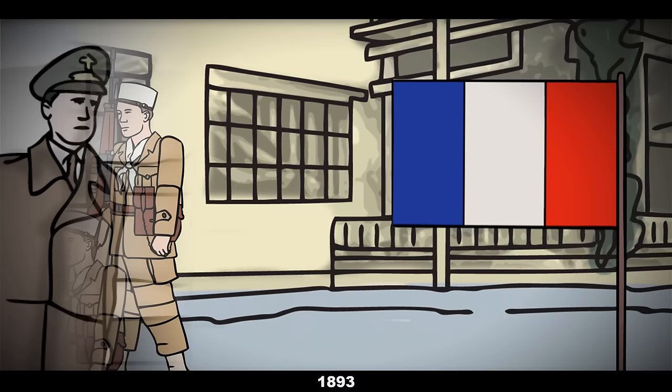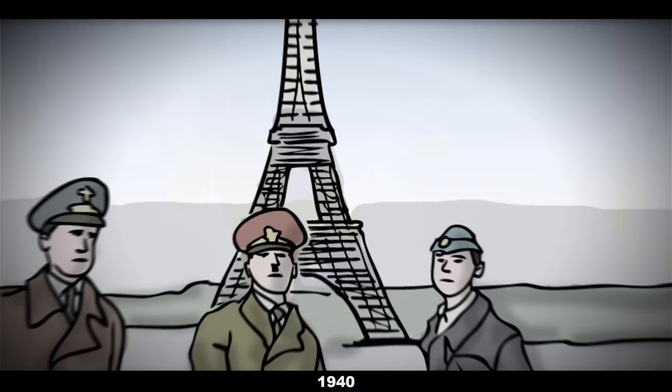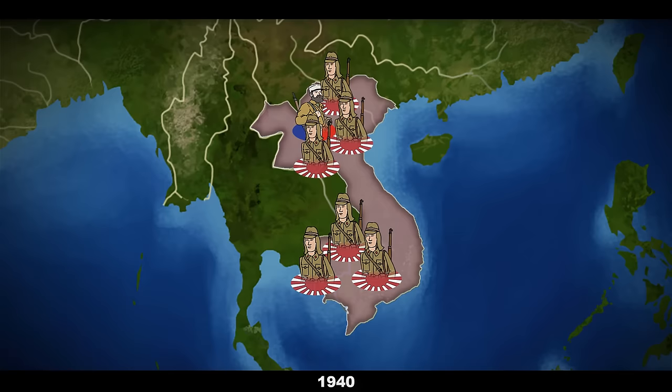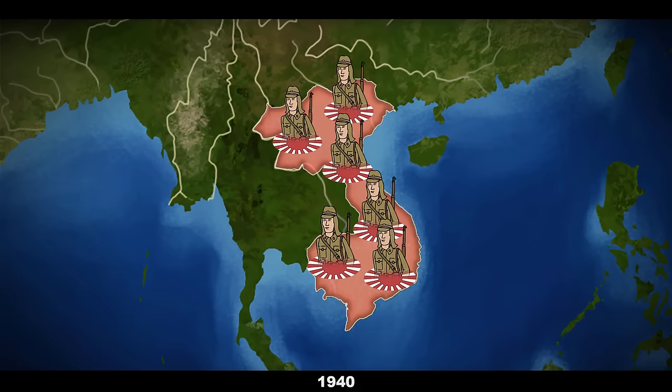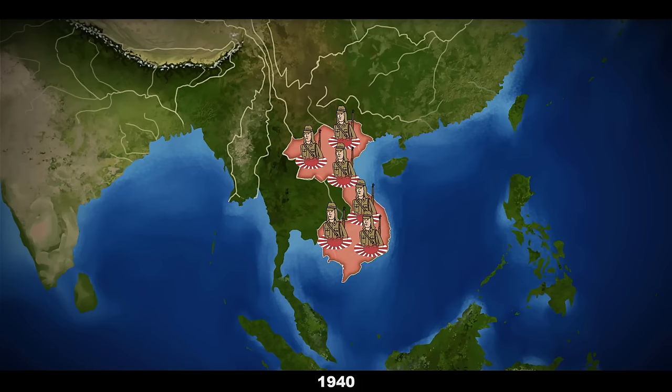But this changed during the Second World War. In 1940, France was occupied by Germany, leaving their colonial territory largely undefended, and Japan was quick to seize this opportunity. Some initially saw the Japanese as Asian liberators, but were quickly disillusioned by the sheer brutality of the new regime, and nationalist sentiments began to sweep the nation, calling for self-governance.